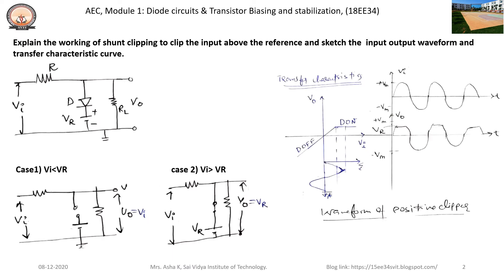Let us discuss the working of a shunt clipping circuit to clip the input above the reference voltage, and also sketch the input-output waveform and the transfer characteristics curve. The diode D is connected across the load resistance RL in parallel — hence it is called the shunt clipping circuit. The resistance R is connected to the anode terminal and the input voltage. The cathode terminal is connected to a positive reference voltage of, say, 2 volts, and the negative terminal is connected to ground. The output voltage is measured across RL. We consider two cases: when input is less than the reference voltage, and when input is greater than the reference voltage of 2 volts.